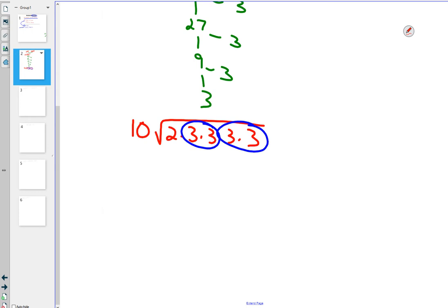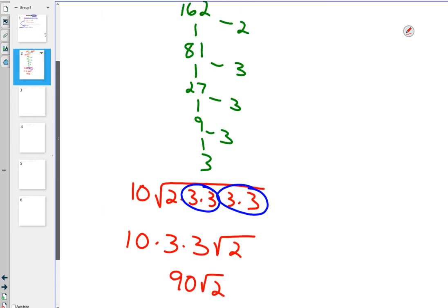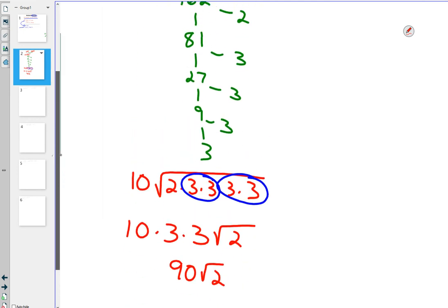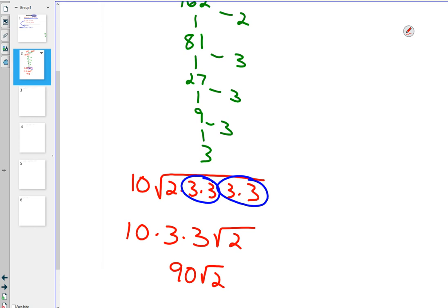So now we got the 10 that was already on the outside. And that's going to be joined by how many 3's also on the outside now? Not 4, 2. And what got stuck on the inside? That's 2. 10 times 3 times 3 is 90. 90 square root of 2. This is simplest radical form. 90 square root of 2 is simplest radical form.